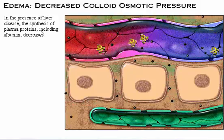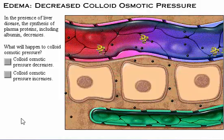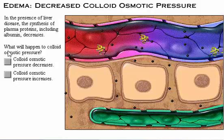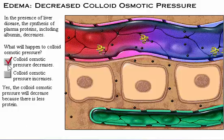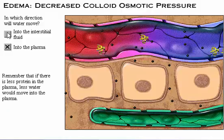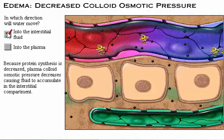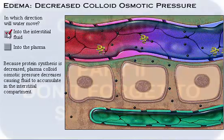In the presence of liver disease, the synthesis of plasma proteins, including albumin, decreases. The colloid osmotic pressure will decrease because there is less protein. Because protein synthesis is decreased, plasma colloid osmotic pressure decreases, while fluid moves out of the plasma into the interstitial compartment, resulting in edema.